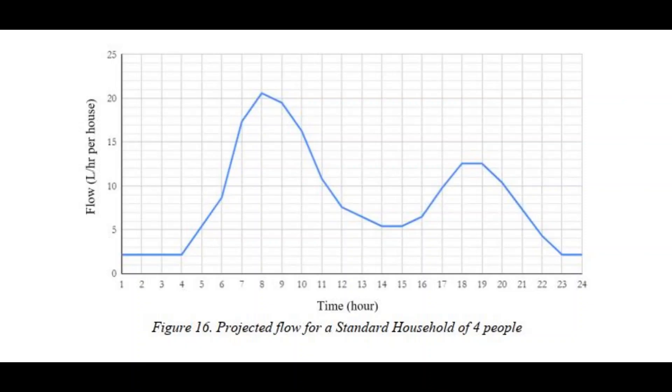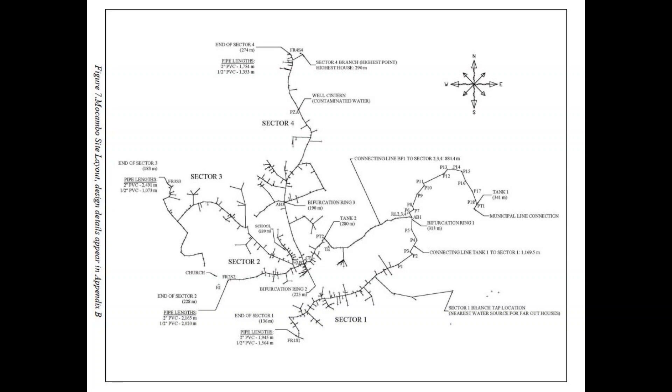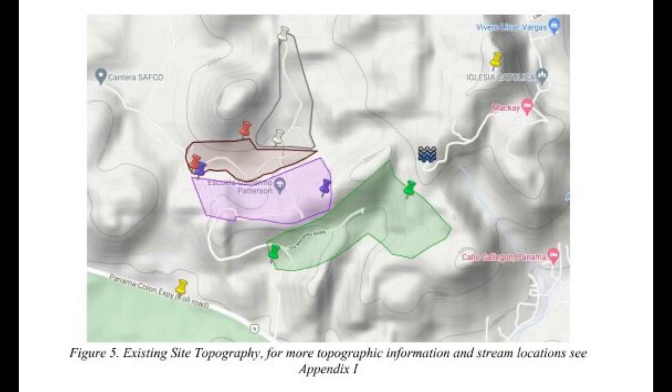A usage curve is also provided for the community. The design report has mapping, topography, and layout. This is how the network will look in each sector.